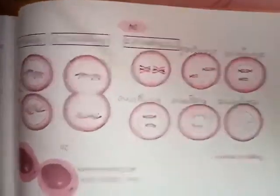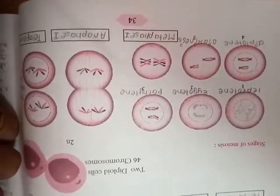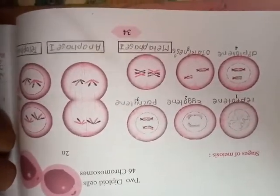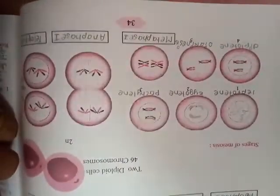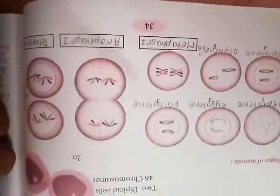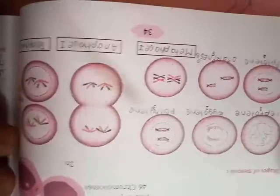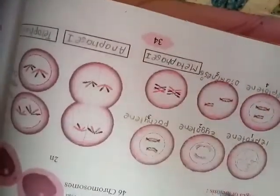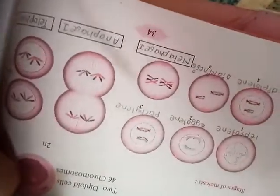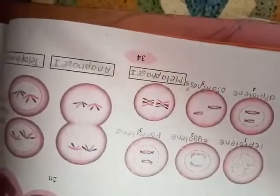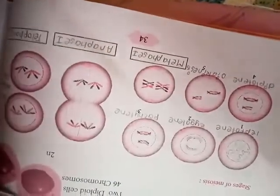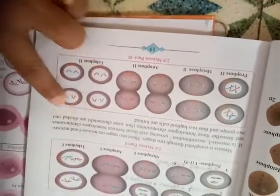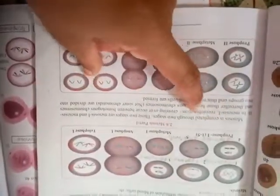So this is meiosis cell division. Now this meiosis cell division is divided into two phases: meiosis 1 and meiosis 2. And in mitosis that was karyokinesis and cytokinesis. This is the difference.